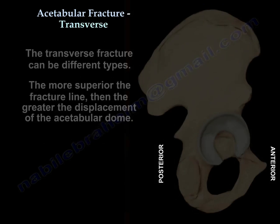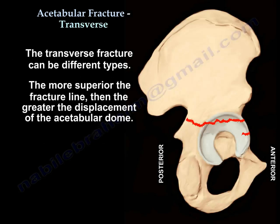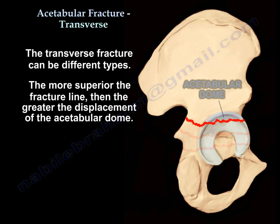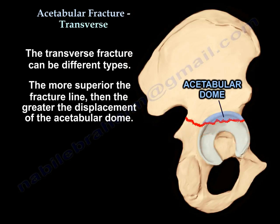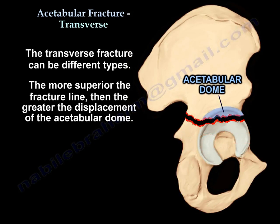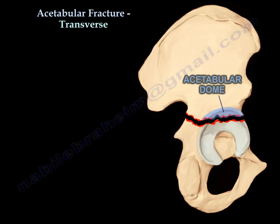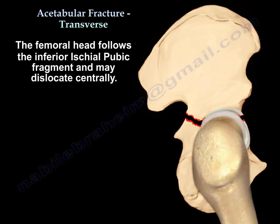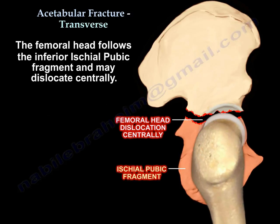The transverse fracture can be of different types. The more superior the fracture line, the greater the displacement of the acetabular dome will be. The femoral head follows the inferior ischiopubic fragment and may dislocate centrally.